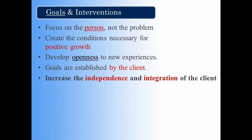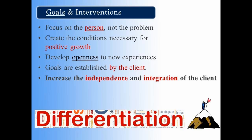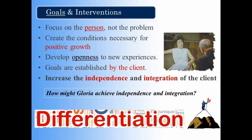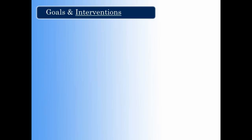Now the final goal, to increase the independence and integration of the client, sounds a lot like Bowen's systemic concept of differentiation. How might Gloria achieve differentiation, or independence and integration? One way might involve her daughter. She might set a goal to establish more congruence with the person she wants to be — her real self — and the person she wants her daughter to look up to — her ideal self. With all these goals, what interventions would we use to achieve them?